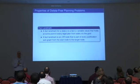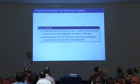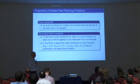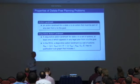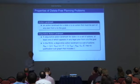A fact landmark for a state is a fact that holds at some point in every legal plan for the state. In terms of the graph, a fact landmark is an OR node that is part of every justification subgraph from the start node to the target node. An action landmark for a state is an action that must be part of any plan. A disjunctive action landmark for a state is a set of actions, at least one of which appears in any plan from the start node to the goal. So in the relaxed causal graph, a disjunctive action landmark is a set of actions such that if you remove them from the graph, there is no longer a justification subgraph that includes the last node T.